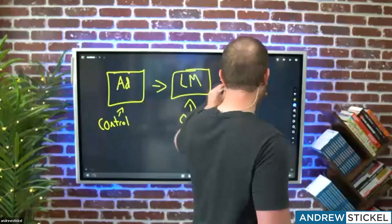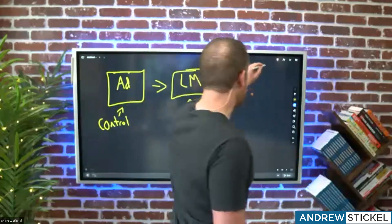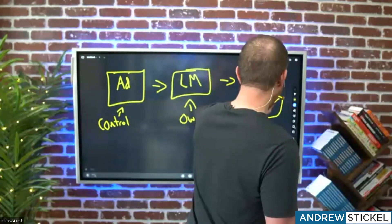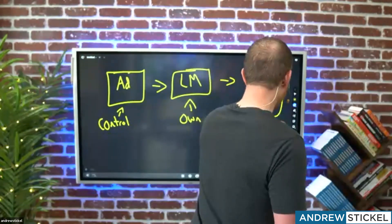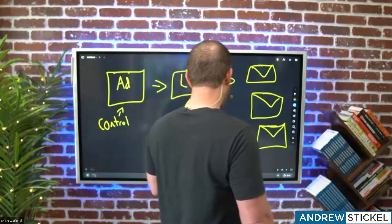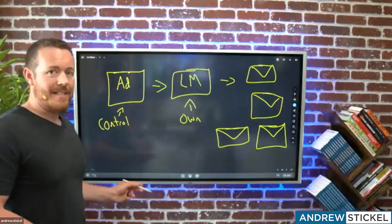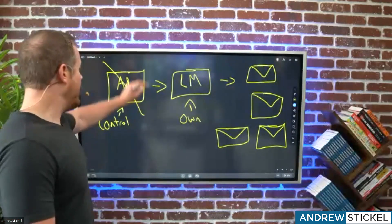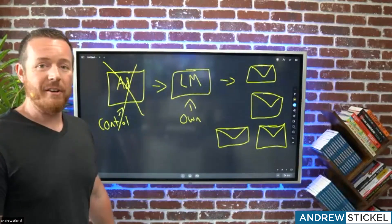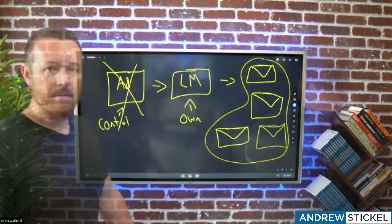We do that by capturing their email address and phone number on our lead magnet page. Once we have their email and phone number, we can send them emails — and this is traffic that we own. Because now that we send them emails, we don't have to pay every single time. And if Mark Zuckerberg or Google decides they don't like you and shuts down your ad, they can't shut down the fact that you own those email addresses.